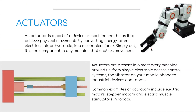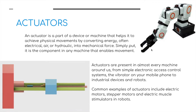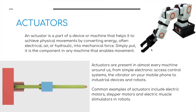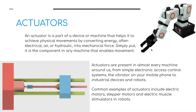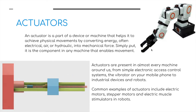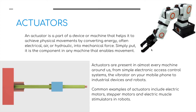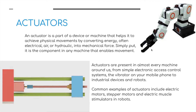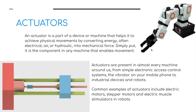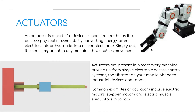Let's start with actuators. You may not have heard of the term actuator before, but basically it's just a type of motor. An actuator is a part of a device or machine that helps it to achieve physical movement by converting energy — often electrical, air, or hydraulic — into mechanical force. Simply put, it is the component in any machine that enables movement.